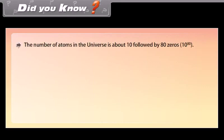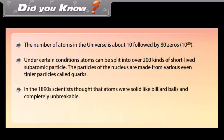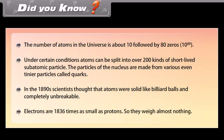Did you know? The number of atoms in the universe is about 10 followed by 80 zeros. Under certain conditions, atoms can be split into over 200 kinds of short-lived subatomic particles. The particles of the nucleus are made from various even tinier particles called quarks. In the 1890s, scientists thought that atoms were solid like billiard balls and completely unbreakable. Electrons are 1836 times as small as protons, so they weigh almost nothing.